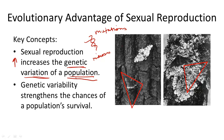For example, if some moths in a population are born white and others are born black, as outlined here, the black moths would remain hidden from predators as long as they were camouflaged by their environment. This variation may help these moths survive long enough to reproduce and pass on their genes to the next generation.